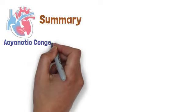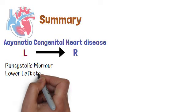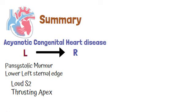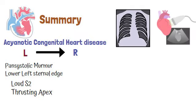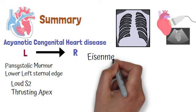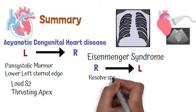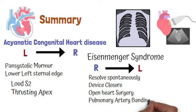A quick summary: VSD is an acyanotic congenital heart disease with a left-to-right shunt. You will hear a pan-systolic murmur at the left lower sternal edge and a loud second heart sound due to pulmonary hypertension. A thrusting apex can be felt due to left ventricular dilation. To diagnose, we can do a chest X-ray and a 2D echo. Eisenmenger syndrome can develop due to reversal of the left-to-right shunt. Most VSDs close spontaneously; if not, device closure or open heart surgery can be done. For palliative care, pulmonary artery banding can be done temporarily.